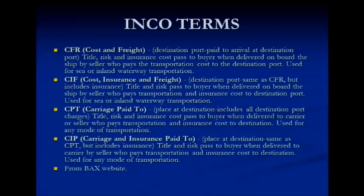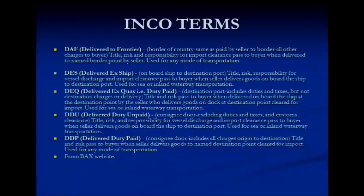Cost and Freight: title, risk, and insurance pass to the buyer when delivered on board the ship by the seller, who pays for transportation cost to the destination port. Then CIF — Cost, Insurance, and Freight — where the seller also picks up the insurance while it's on board the ship. And we keep going all the way to DDP — Delivery Duty Paid — where title and risk pass to the buyer when the seller delivers the goods to a named destination point cleared for import, with transportation covered.